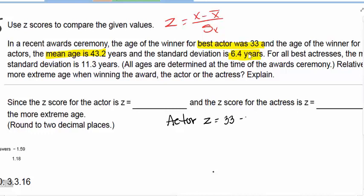33 minus 43.2 over 6.4. I want you to notice this actor's age is below the mean. Because of the way the z-score is set up, an actor's age that is below the mean is going to give me a negative standard deviation. Rounded, and for the z-score, we're going to round to two decimal places.